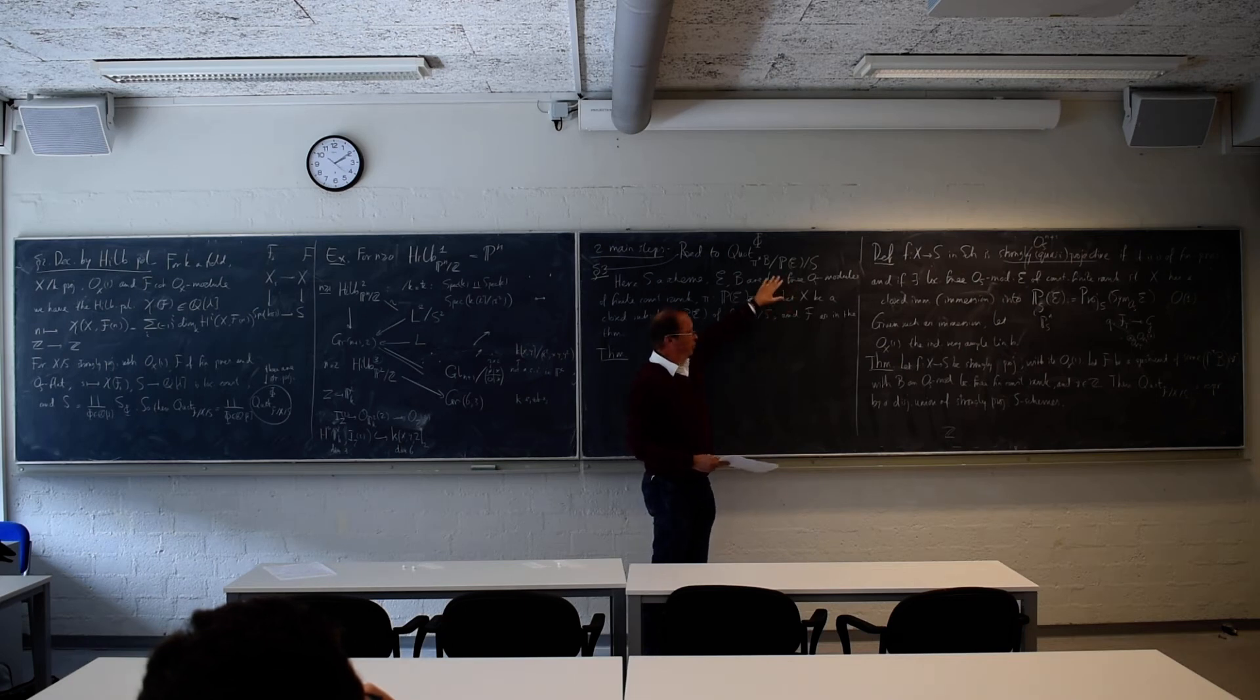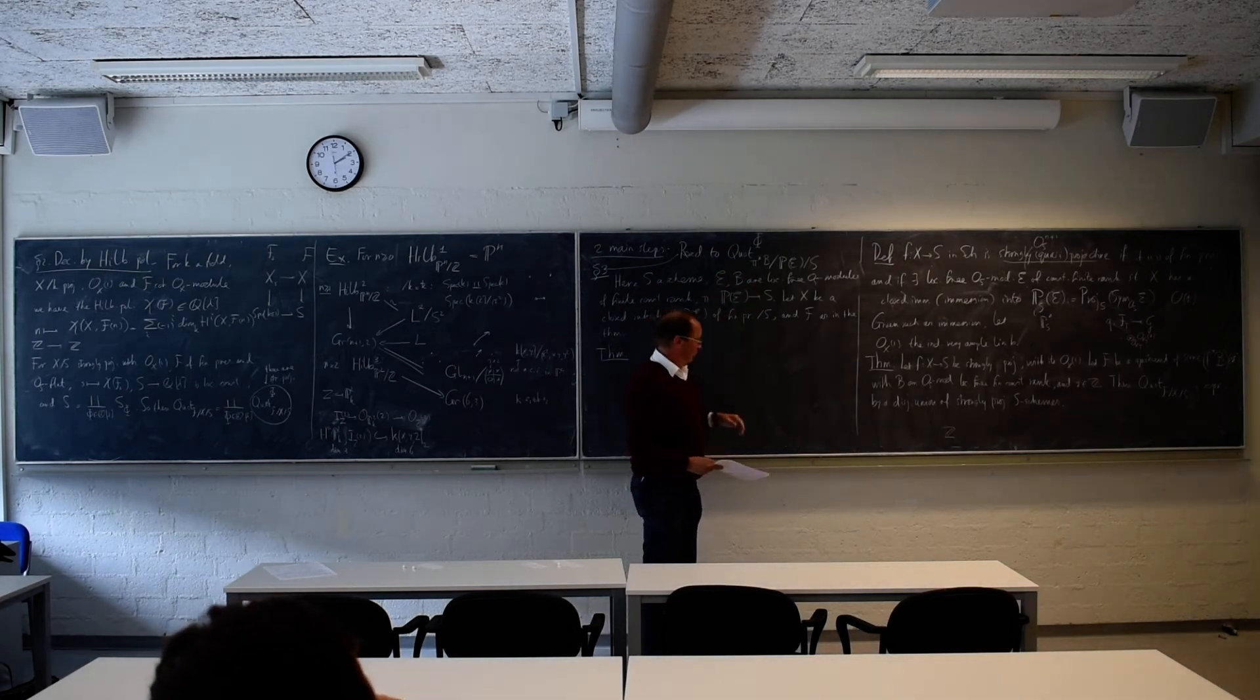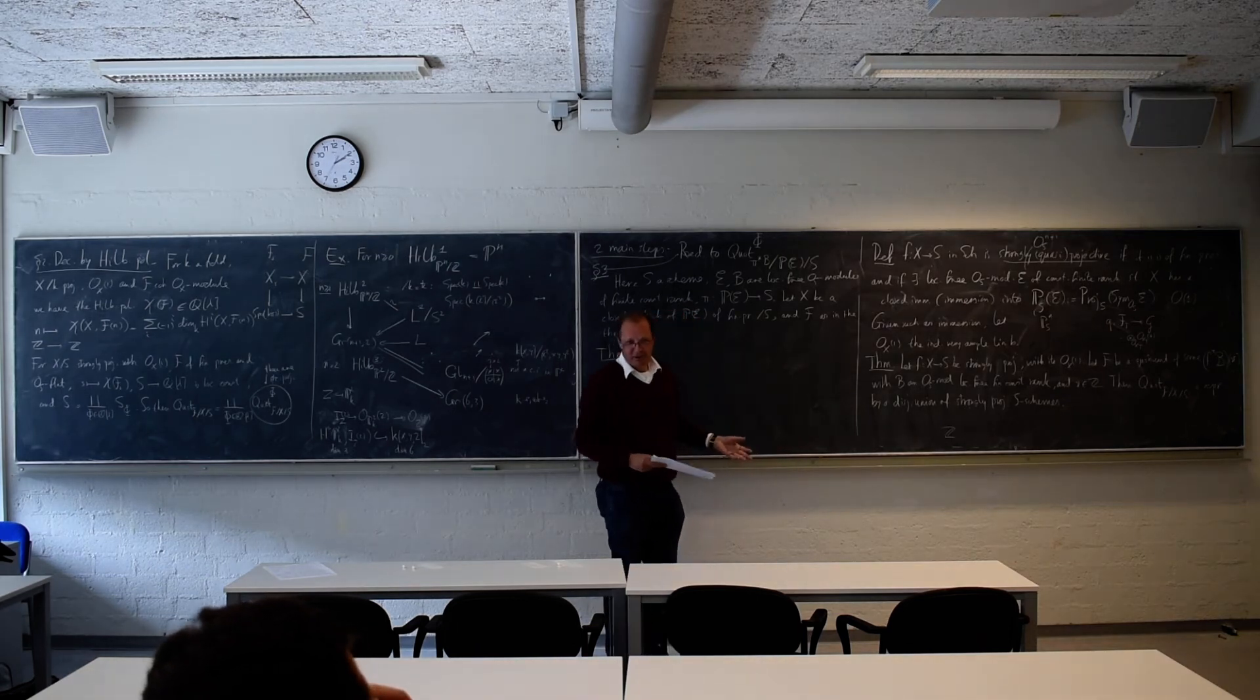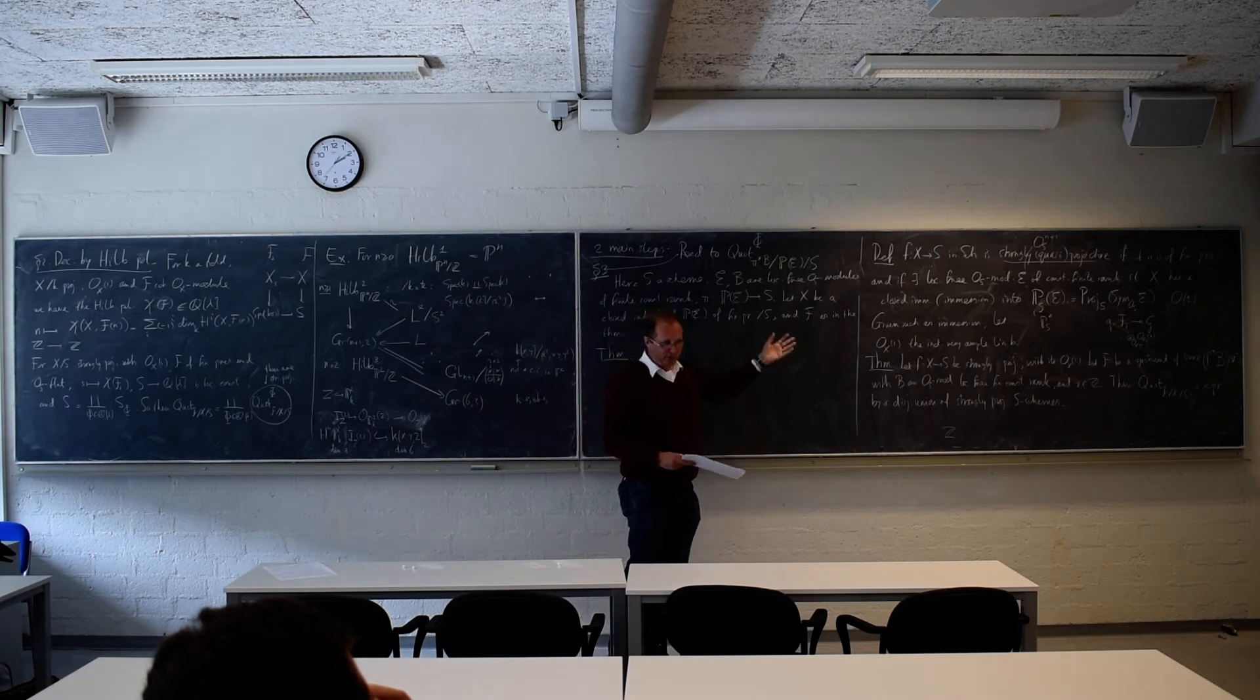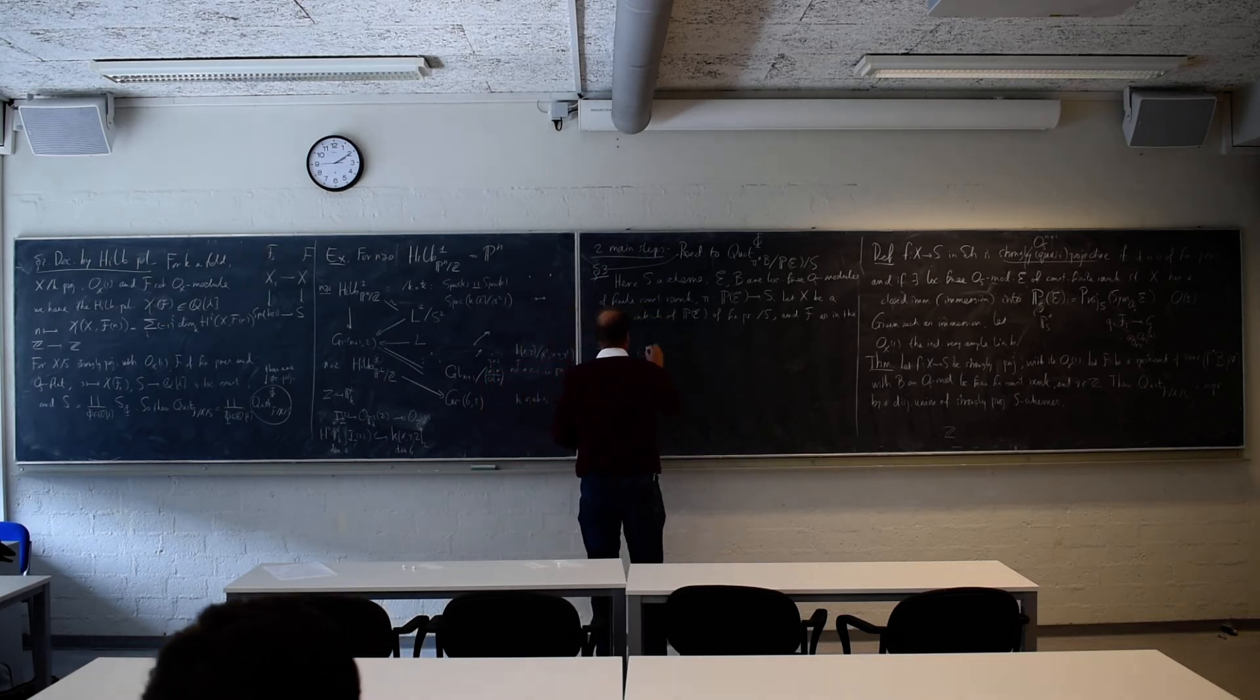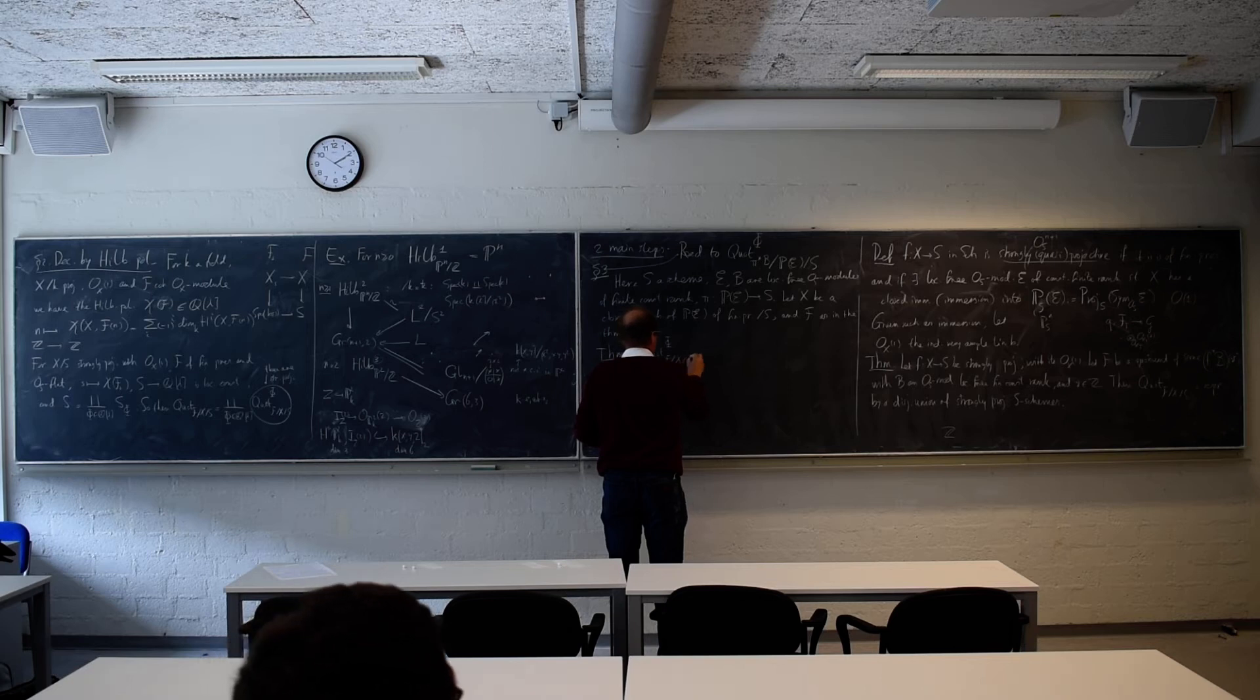So here... Yeah. And so here is a theorem. Well, maybe I should say... So we want to reduce the representability of the quot scheme that is here, in this situation, to the one that is mentioned here in the title. Where the variety has just become... There is no x anymore. There is just a nice projective space bundle.